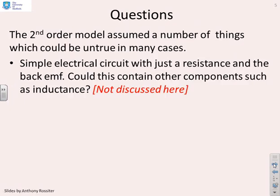Now here's the question: what happens if we changed some of the assumptions? For example, in the previous one we assumed a very simple electrical circuit with just a resistance and a back EMF. What happens if there are other components in the electric circuit? We're not actually going to discuss that in this particular video, but it's something you might want to consider.